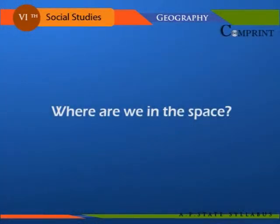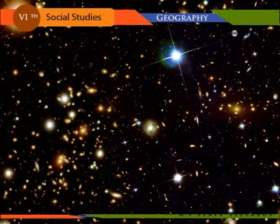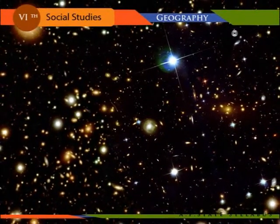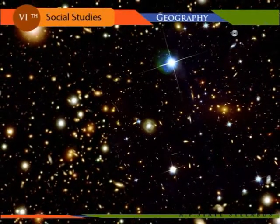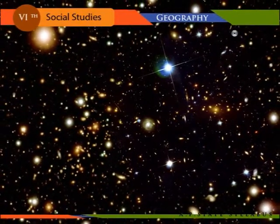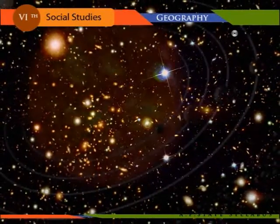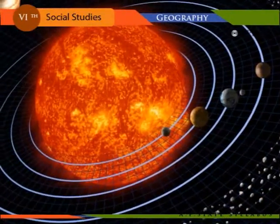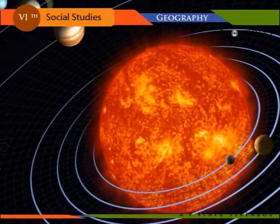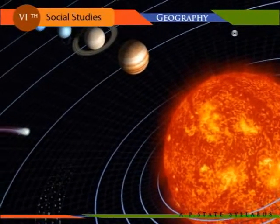Where are we in space? The solar system is unimaginably very large. There are millions of galaxies in the universe. Each galaxy consists of millions of stars. The sun is the biggest star among the millions of stars present in the universe. We live on the Earth — it is one of the eight planets which revolve around the sun. The sun and the planets together are known as the solar system.